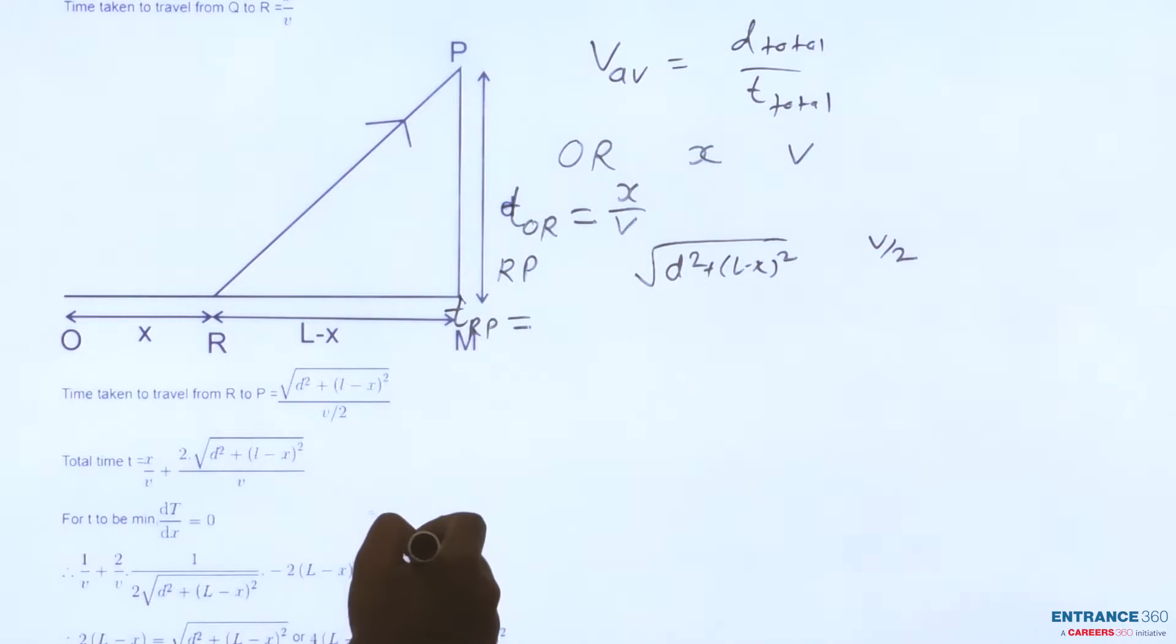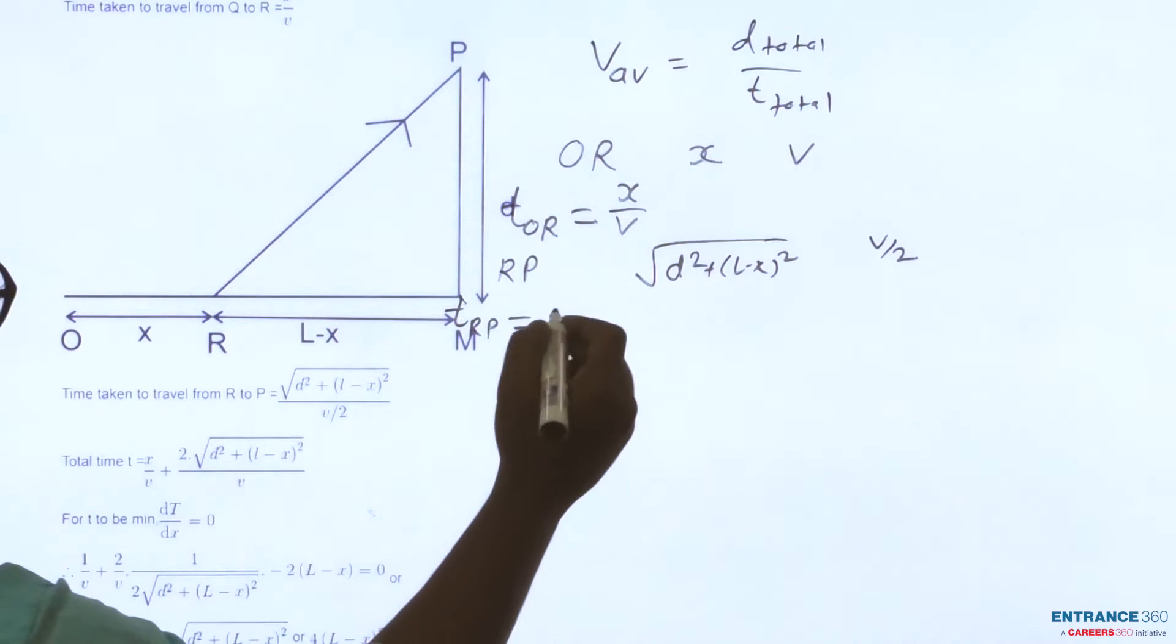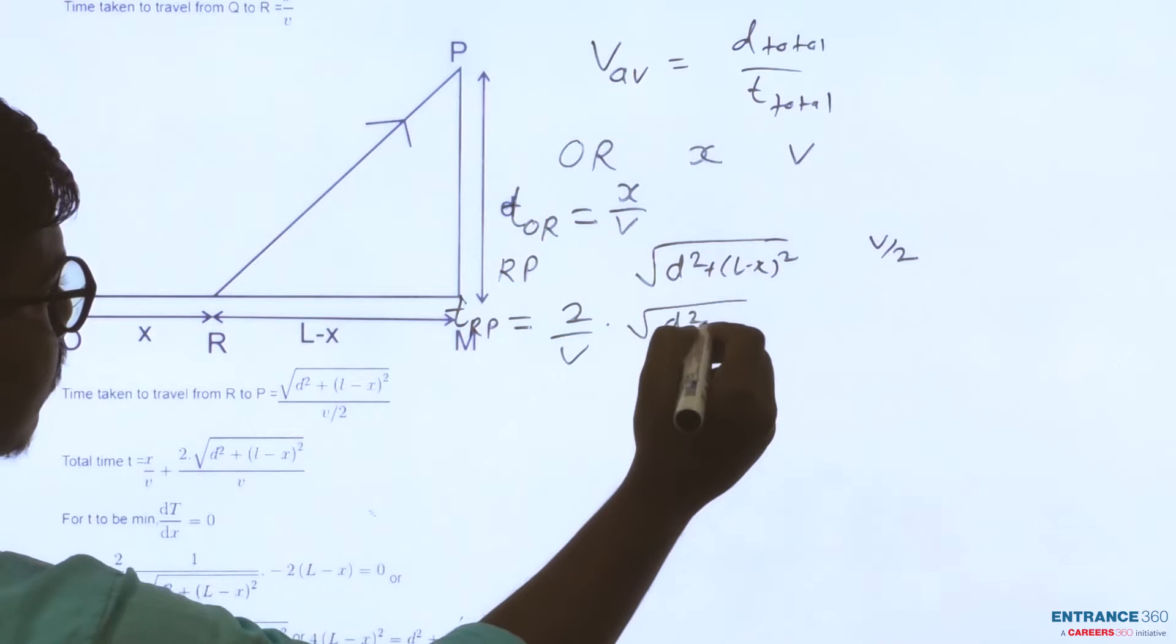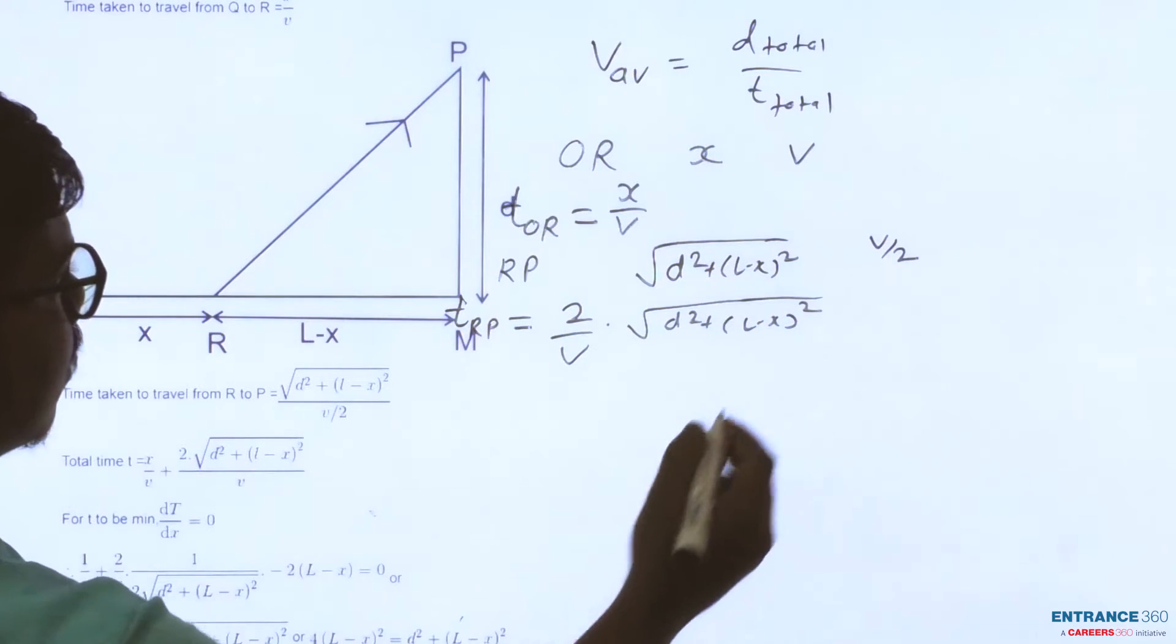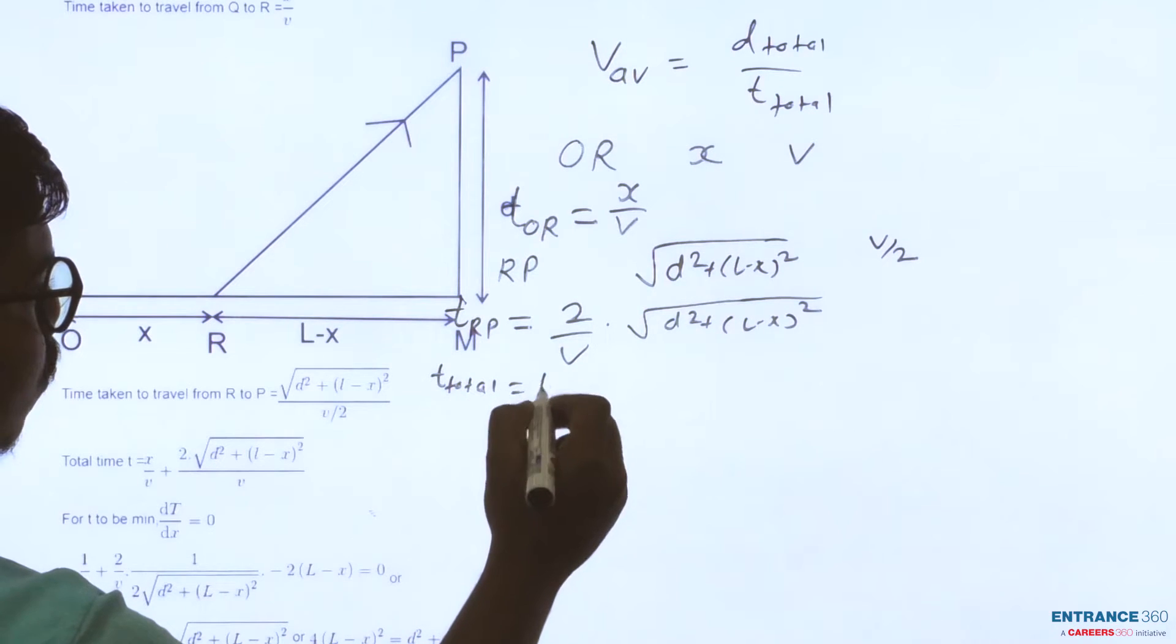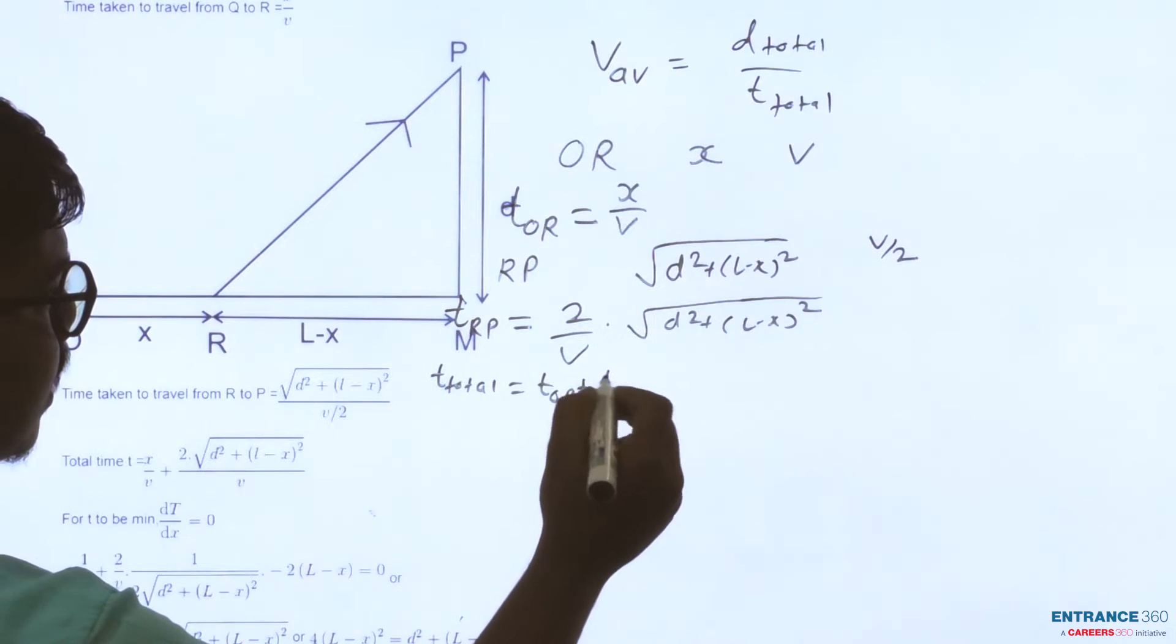So the total time T_total equals T_QR plus T_RP, which equals X/V plus (2/V)√(D² + (L-X)²). This is the total time.